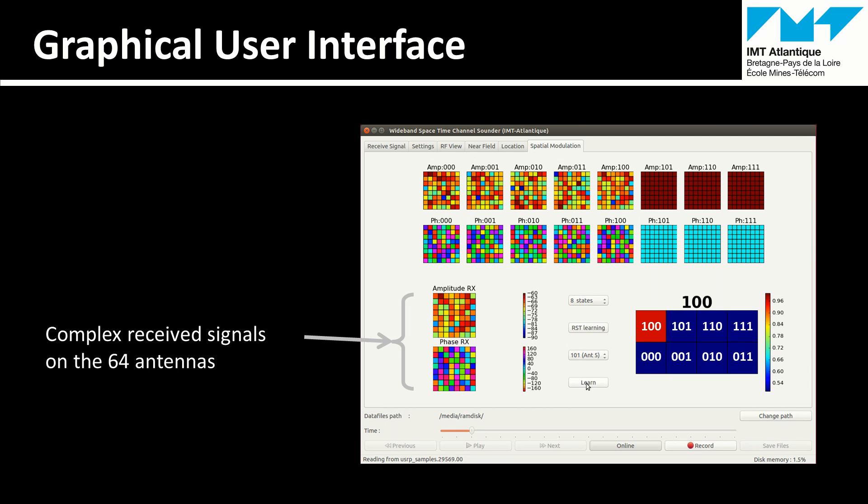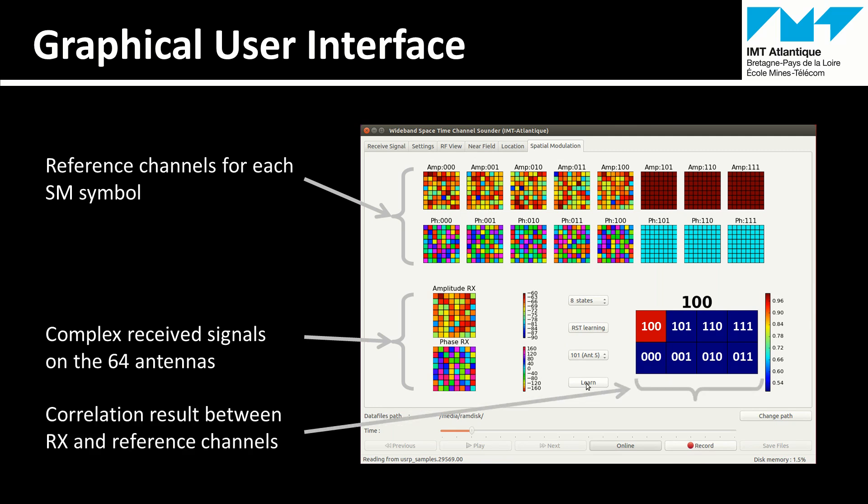The signature of each spatial modulation symbol is stored above. Here, just the first 5 has been learned. The correlation between the received signal and the different symbols is plotted on the right. Red represents a perfect correlation of 1 and blue a correlation below 0.5.